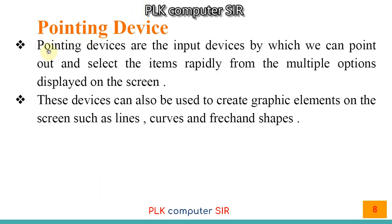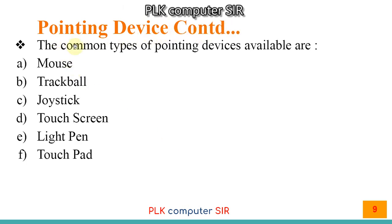Pointing devices are important devices by which we can point out and select items rapidly from multiple options displayed on the screen. They can also be used to create graphic elements on the screen such as lines, curves, and freehand shapes — for example, drawing in MS Paint using a mouse. The common types of pointing devices are: mouse, trackball, joystick, touch screen, light pen, and touchpad.